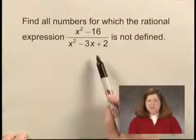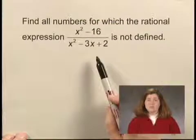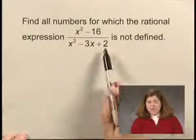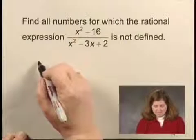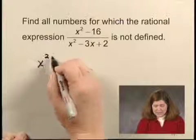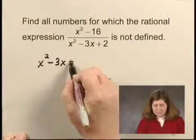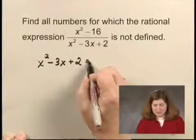This expression is not defined when the denominator is 0. So we need to find what values of x will make the denominator, which is x squared minus 3x plus 2, equal to 0.